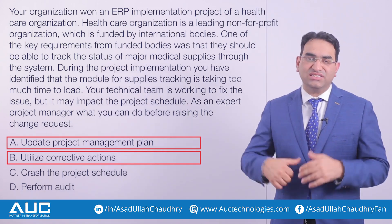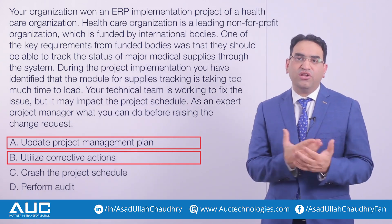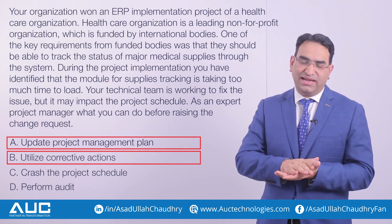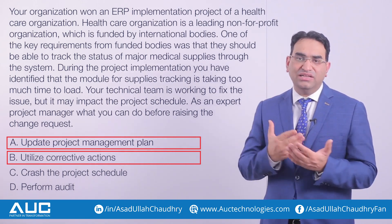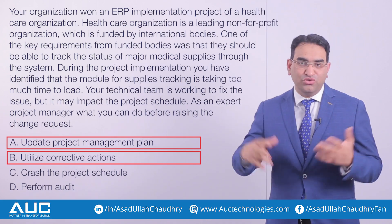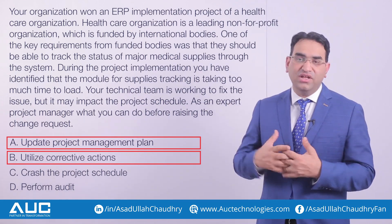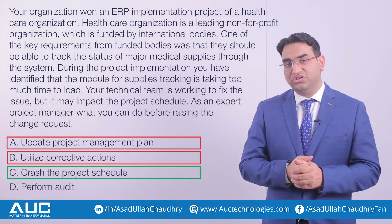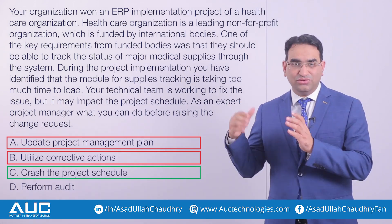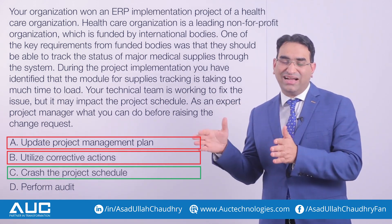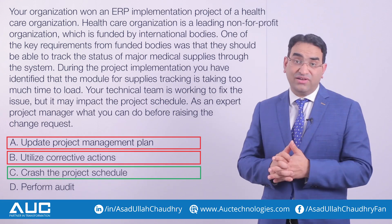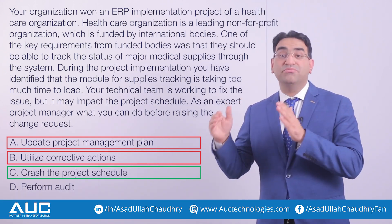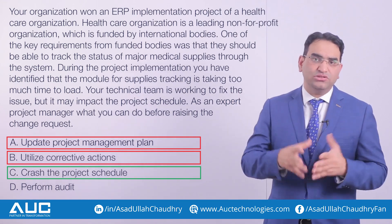Option C says crash the project schedule. One crashing technique is to ask your team to do extra time — utilize overtime to complete the project — or you can reduce some lag time if you have any. This is the right option in this scenario. You can crash the project schedule so that your schedule stays on time. It may impact cost, but you can use it.